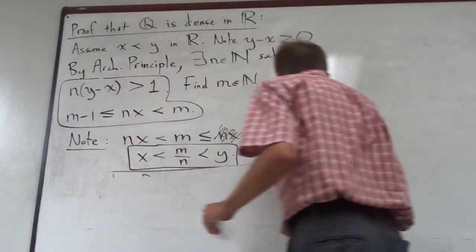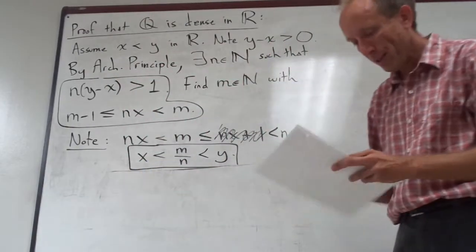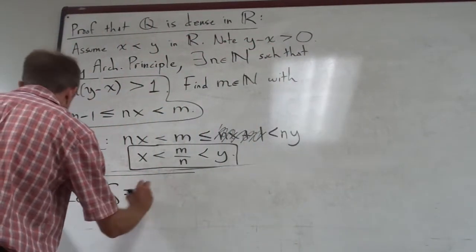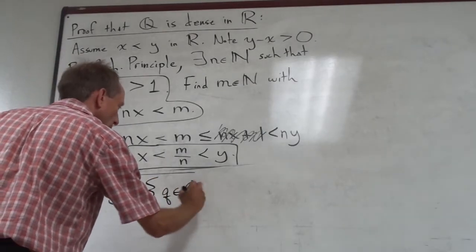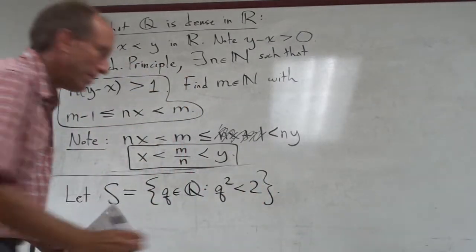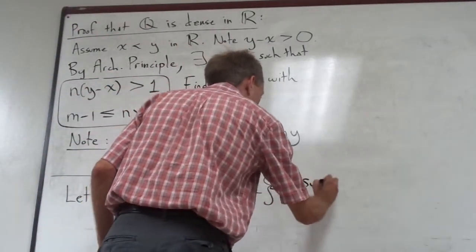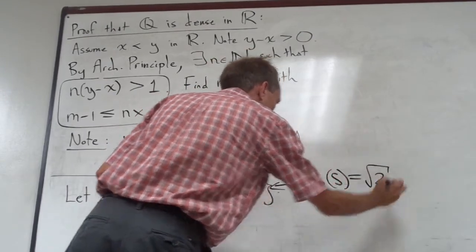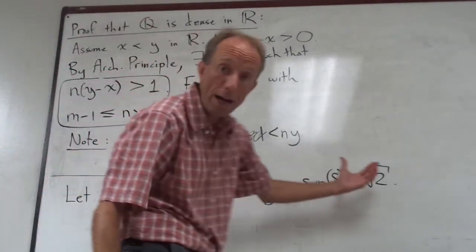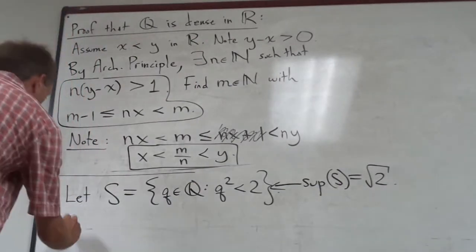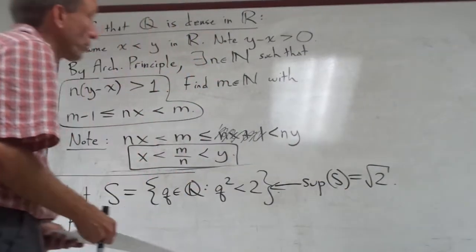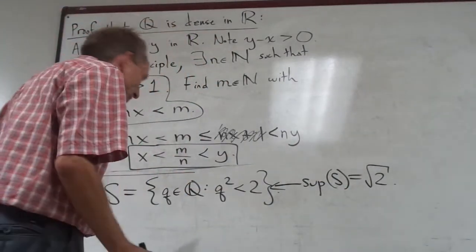One last little thing as an example. Remember that I mentioned in class that if we take S to be the set of rational numbers q such that q squared is less than 2, the supremum of that set is the square root of 2 — which is of course not rational. I want to make a quick little proof of that. Let's prove that the supremum of this set is indeed the square root of 2, and we're going to use the density of Q to make that argument.